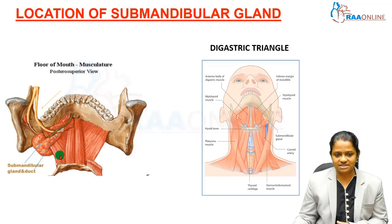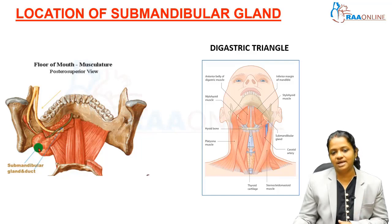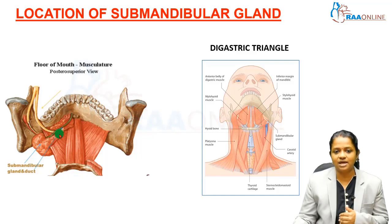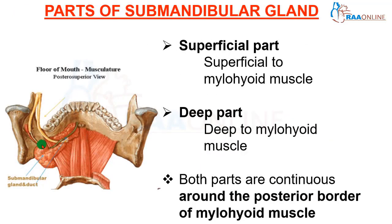The myelohyoid muscle, attached to the myelohyoid line, forms the floor of the oral cavity. The main part of the submandibular gland is superficial to the myelohyoid muscle — below the floor of the mouth — while a part of the gland extends deeper to the myelohyoid muscle inside the floor of the oral cavity. Therefore, the myelohyoid muscle divides the submandibular gland into a superficial part and a deep part.